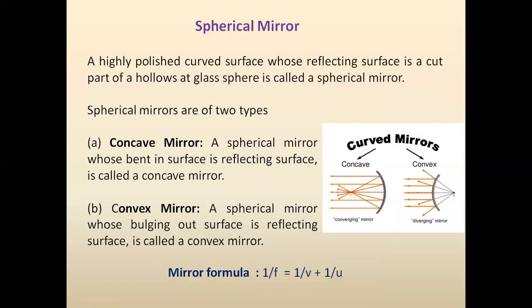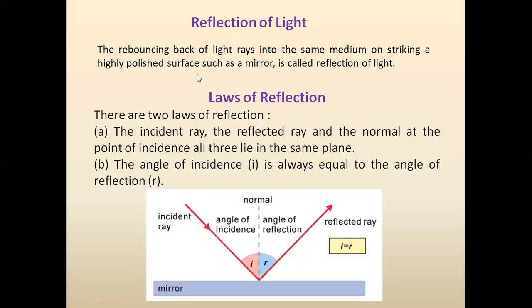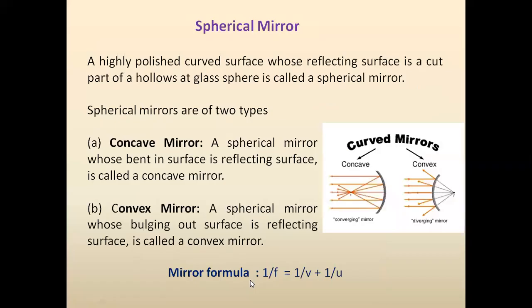We already know what a plane mirror is and how reflection occurs on a plane mirror. Now we focus on the spherical mirror. A spherical mirror is a highly polished curved surface whose reflecting surface is a cut part of a hollow glass sphere. It is called the spherical mirror.